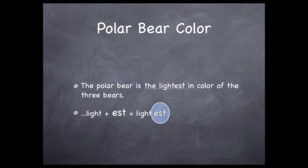Now, let's do the same with color. The grizzly bear is usually lighter in color than a black bear, as brown is a lighter color than black. But even the lighter grizzly bear finds itself dark compared to the white polar bear. So out of the three bears, we say that the polar bear is the lightest. We just add est to the end of the adjective light to form the superlative, lightest.